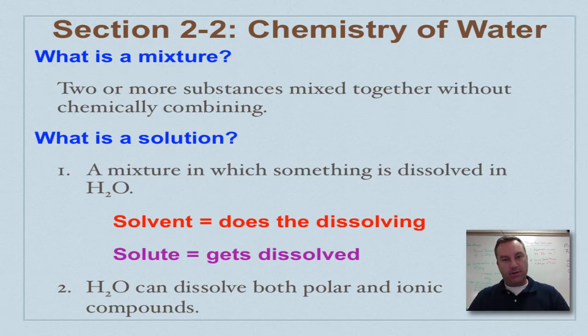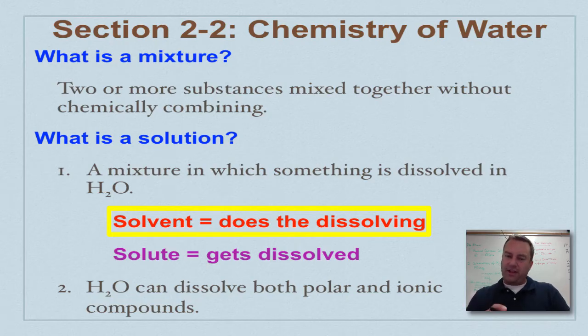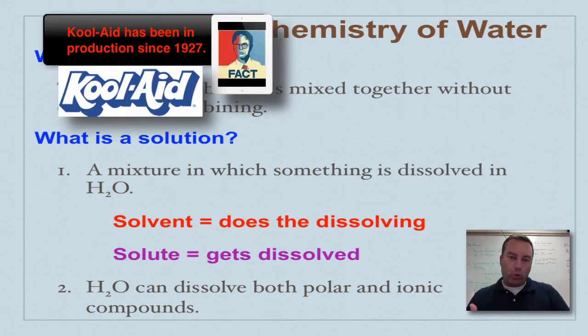Now, when you talk about a solution, you have two key vocabulary words, and these are down here in red and purple. As you see down here in red, solvent is the substance that does the dissolving. Think of it as like a liquid. So if you were to make Kool-Aid, the water that you would put the Kool-Aid powder and the sugar in, that's going to be the solvent.